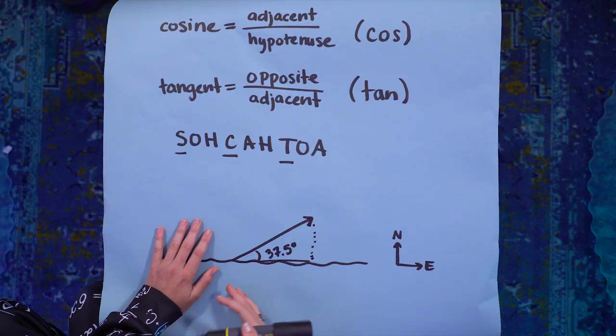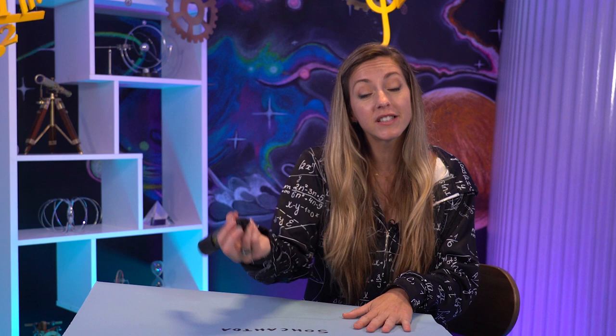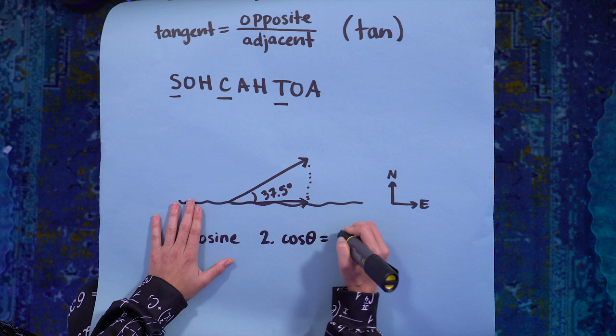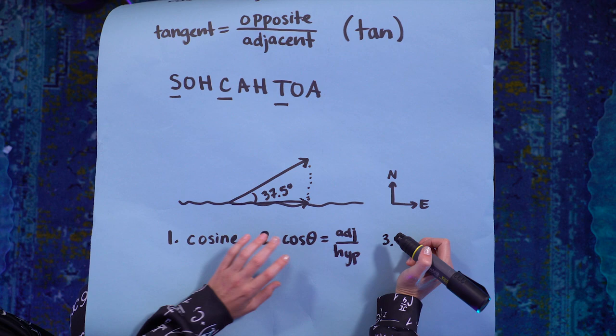Let's do east first. That's this side of my triangle, the adjacent side. Now I follow a procedure that will become habit every time I solve this kind of problem so that I don't make silly mistakes. First, I figure out, do I need sine, cosine, or tangent? Well, I'm looking at the adjacent side. So adjacent means cosine, so I'm going to use my cosine. Step two, I write down the definition of cosine. Cosine equals adjacent over hypotenuse. And step three, I plug in what I know and I solve for what I don't know.